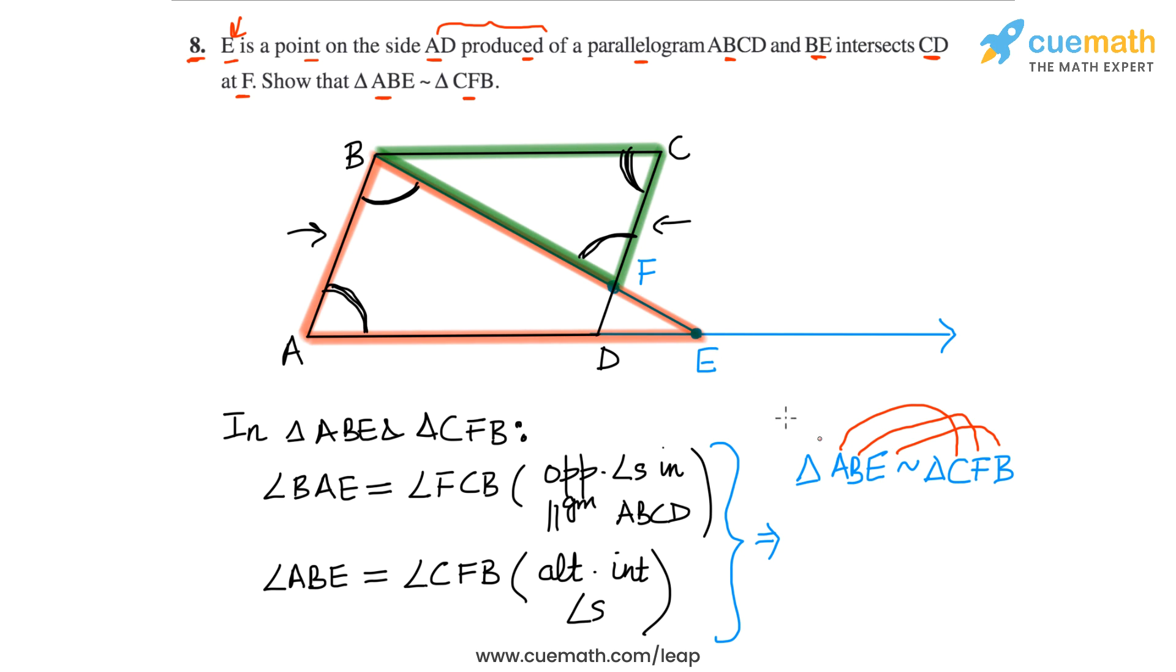So make sure that you get this right. And this similarity we can claim because of the AA similarity rule, the AA similarity criterion. So this is what we have, we had to prove triangle ABE similar to triangle CFB.